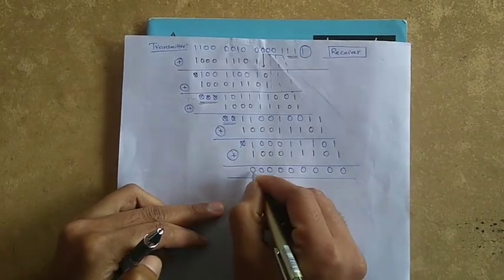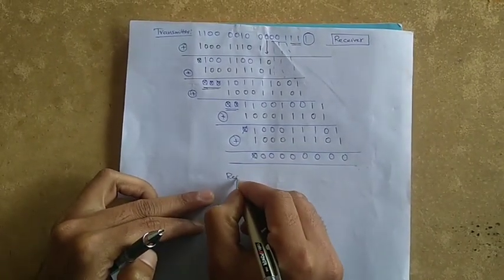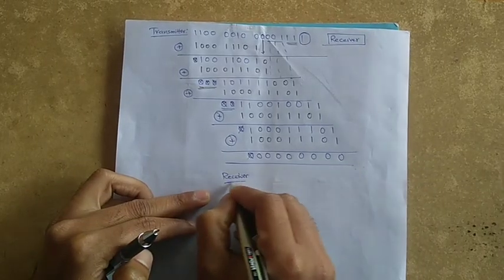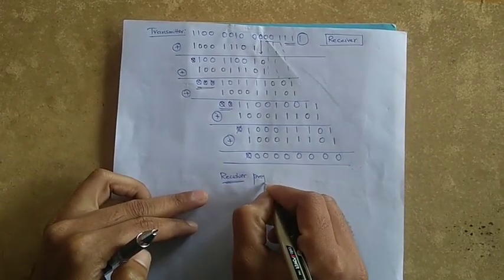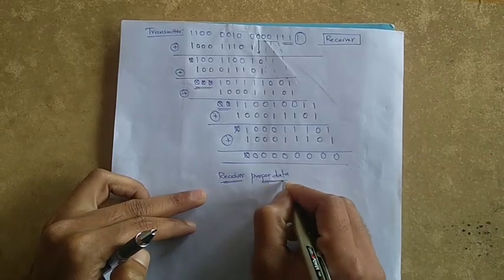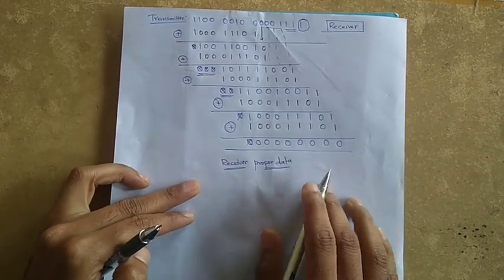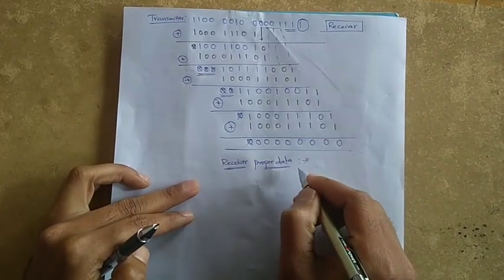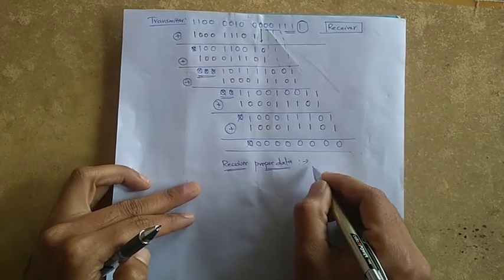All are zeros. This means that in the receiver, we have received the proper data — no errors detected. That is about CRC. I hope you liked this video, and if you have any doubts or concerns, please post in the comment box.